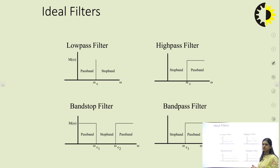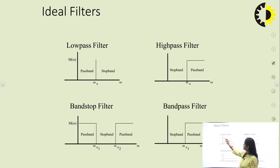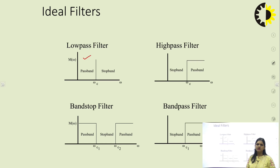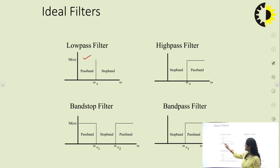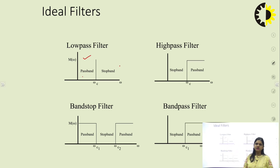The slide shows the ideal filter responses. For low pass, the pass band is the band where all frequencies are allowed to pass, and the stop band is where the filter attenuates all frequencies. For the low pass filter, the pass band is before omega c, and the stop band is after omega c — omega c being the cutoff frequency.